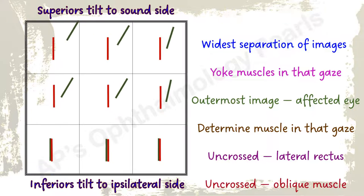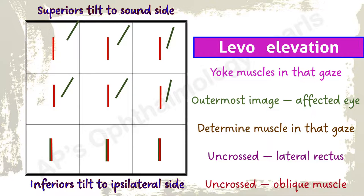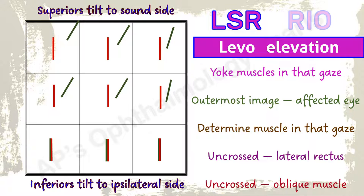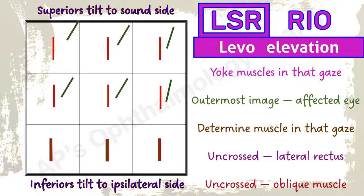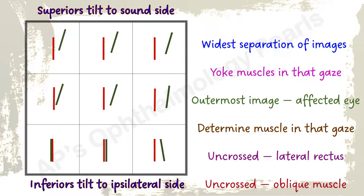Now for the next example. Here the maximum separation of images is in levo elevation. The yoke muscles in levo elevation are the left superior rectus and the right inferior oblique. Green is the outermost image, so the left eye is involved — this is a left superior rectus palsy. This is a crossed diplopia, so the rectus checks out. The tilt is towards the sound side, so superior checks out.